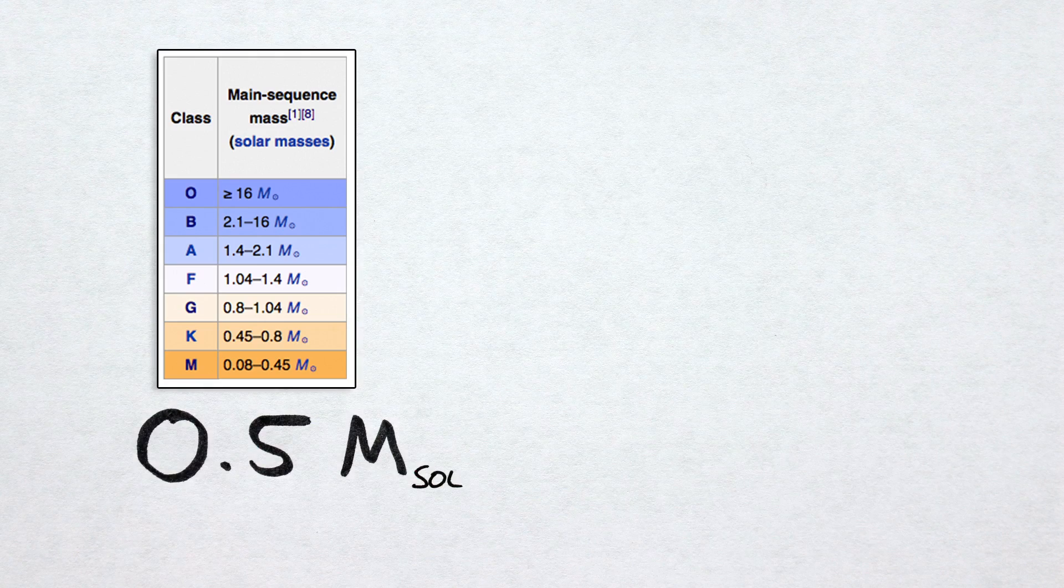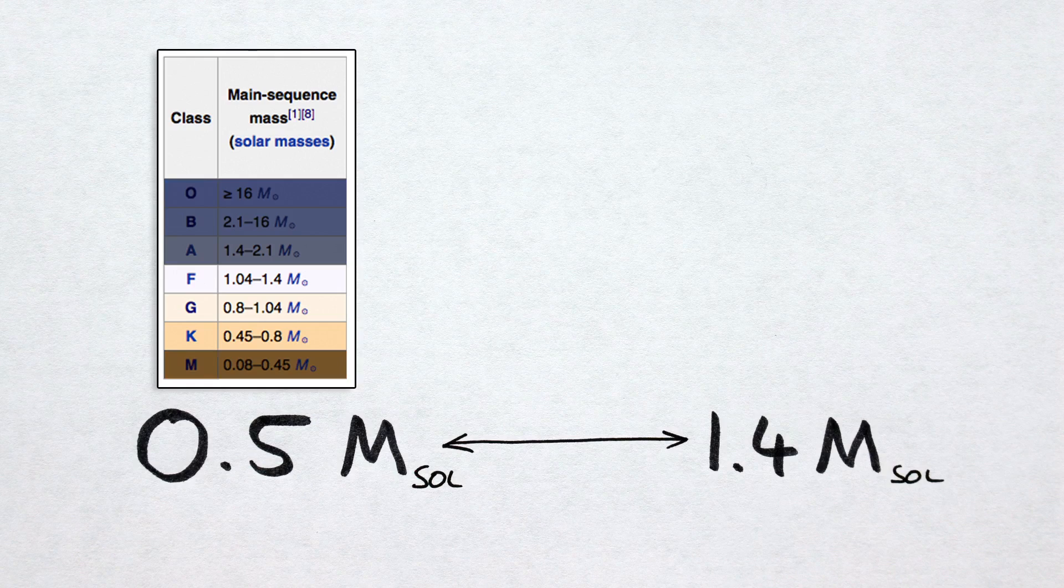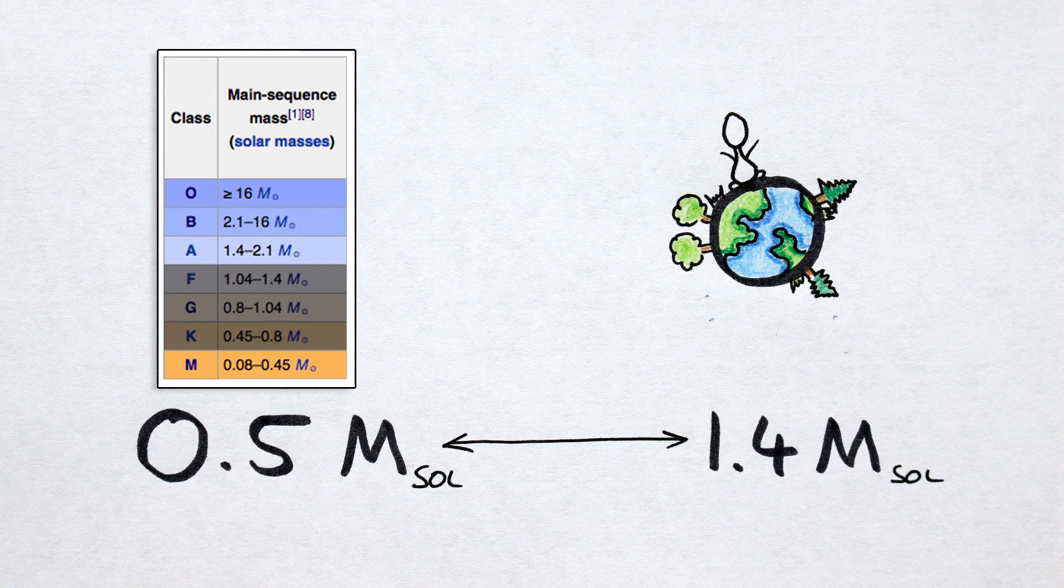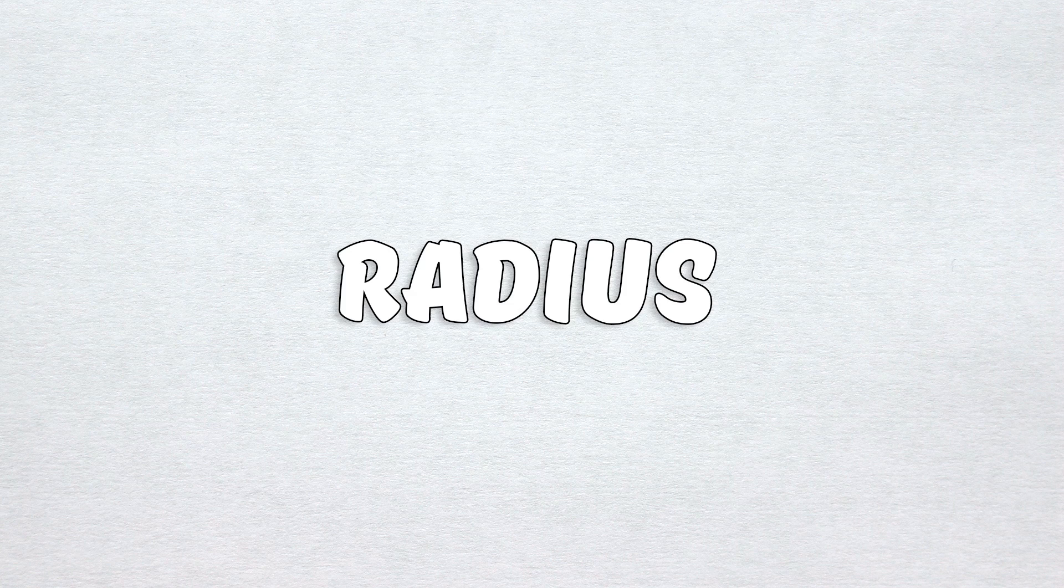Now only stars between 0.5 and 1.4 solar masses are considered habitable. That is habitable in the sense that carbon-based humanoid lifeforms could naturally evolve on planets orbiting these stars. Everything else isn't uninhabitable per se. Their planets could be locations for colonies, mining expeditions and/or exile locations for little green lads with terrible syntax.